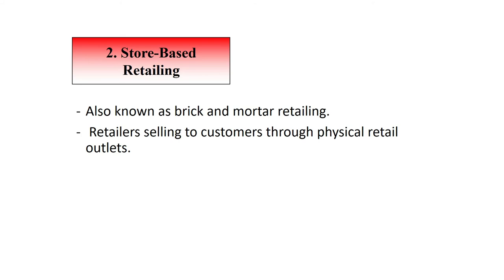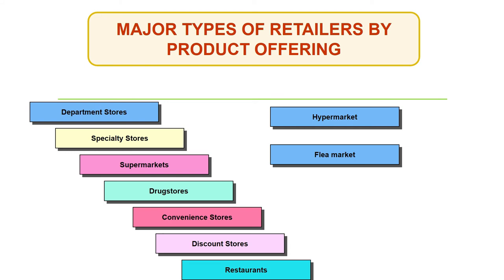Store-based retailing, also known as brick-and-mortar retailing, is where retailers sell products to customers through a physical retail outlet. The major types of retailers by the product they offer include department stores, specialty stores, supermarkets, drug stores, convenience stores, discount stores, restaurants, hypermarkets, and flea markets.